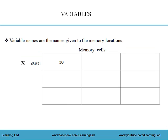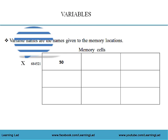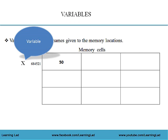So the variable names are the names given to the memory locations. That variable name may contain some other value at a later time — before, x was containing 10, but right now it's containing 50. This 50 is an integer constant, and x is a variable because it can contain any other constant value. If it's of type integer, it can contain any integer constant.